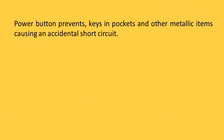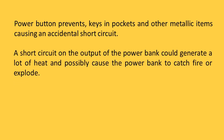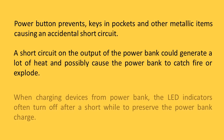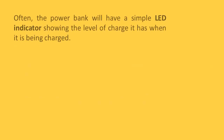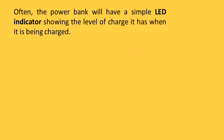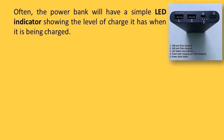The power button prevents keys in the pocket and other metallic items from causing an accidental short circuit. A short circuit on the output of the power bank could generate a lot of heat and possibly cause the power bank to catch fire or explode. When charging devices from a power bank, the LED indicators often turn off after a short while to preserve the power bank's charge. The power bank will also have a simple LED indicator showing the level of charge when it is being charged.